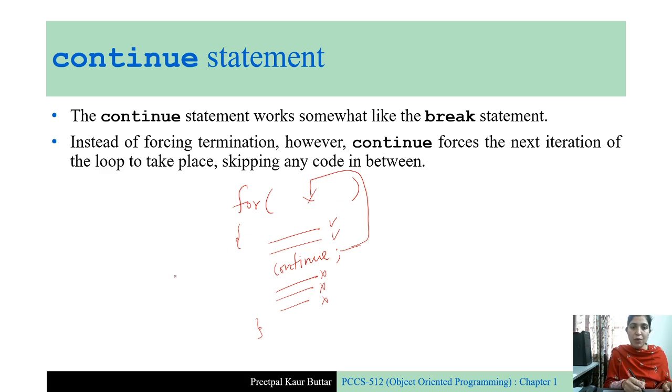For example, here you were at the second iteration. And then the continue statement was encountered. And then you will skip these three statements in the for loop. And you will move to the next iteration, that is the third iteration.